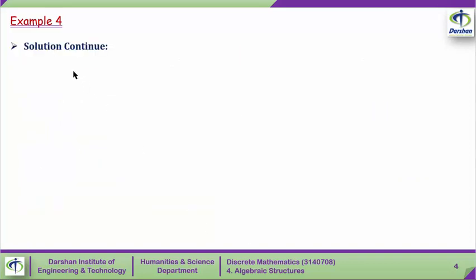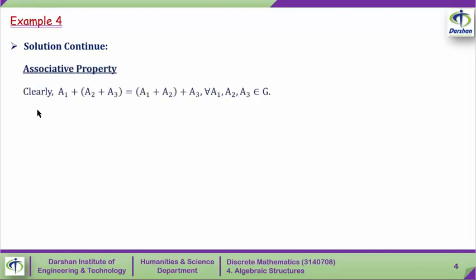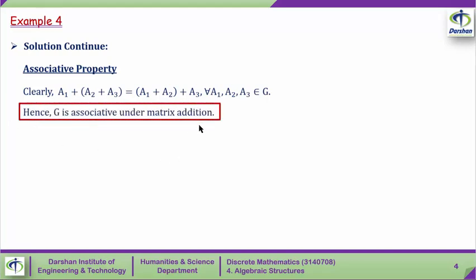The second property is the associative property. We know that matrix addition is associative, so clearly (A1 + A2) + A3 is the same as A1 + (A2 + A3). This property holds for each A1, A2, A3 from G, and hence G is associative under matrix addition.